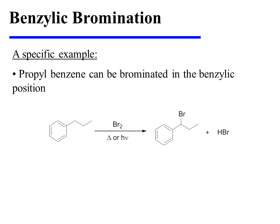Let's turn our attention to a specific example. Propyl benzene can be brominated in the benzylic position using bromine along with heat or light to initiate the reaction.